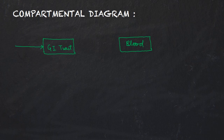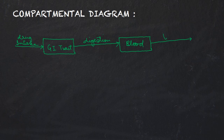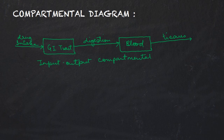Both of these compartments have a single input and a single output. In the GI tract, as input we have drug intake, and then this goes through digestion. From the blood, it is sent to tissues. This is the input-output compartmental diagram for drug assimilation.